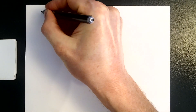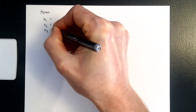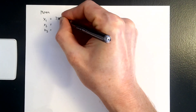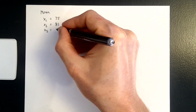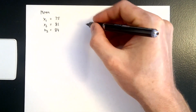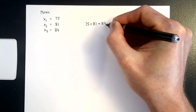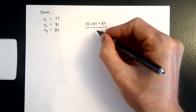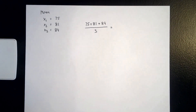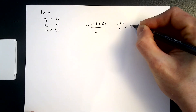Let us do an example with regard to the mean and the weighted mean. Suppose that I have three scores from three students. Let's call those students 1, 2, and 3, and their respective scores x are 75, 81, and 84. Then the arithmetic mean of those three scores would be 75 plus 81 plus 84, summed up and divided by 3. The result is 240 divided by 3, so the average score is equal to 80.